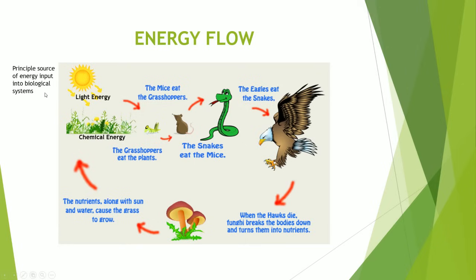The principal source of energy input into a biological system is through sunlight. The sun gives off light, and that light energy is captured by plants and transformed into chemical energy that is present in things like protein, starch, and basically food and nutrients. The chemical energy in plants is then transferred within the food chain by other organisms feeding on the plant, and it gets transferred from one organism to the other, as you can see through this diagram here.